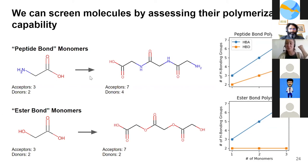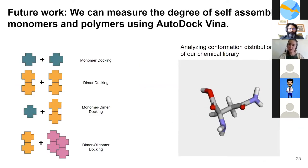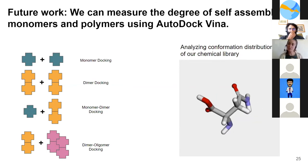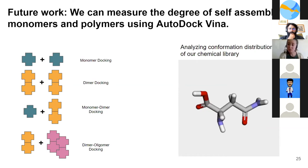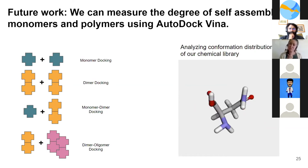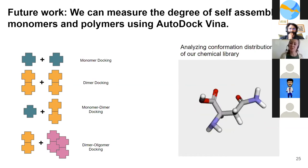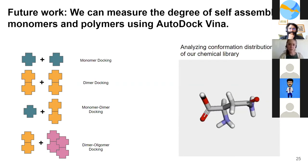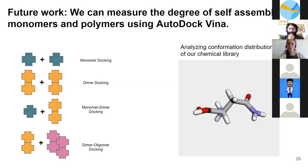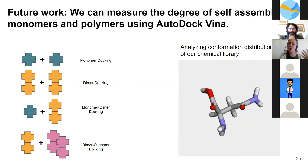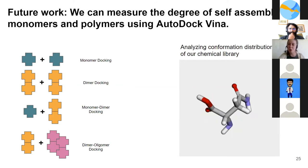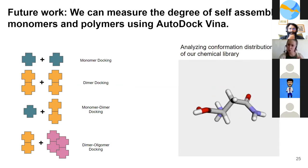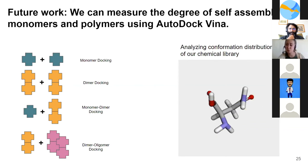Once we have molecules that can hydrogen bond, polymerize, and still possess hydrogen bonding capability thereafter, we intend to measure the energetics of these monomers and their respective polymers. We want to make sure that the polymers we come up with are actually low in energy and thus feasible to form in real life. The software we intend to use can also give us information about conformations, so we can check to see if these polymers can form interesting structures and give us the energy required to do so.